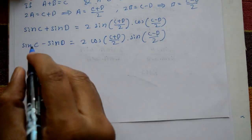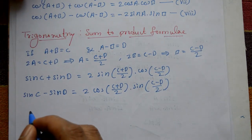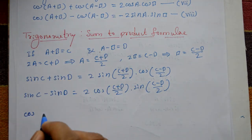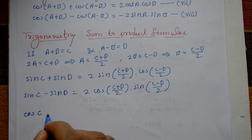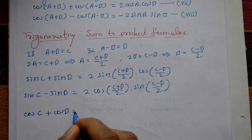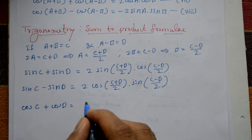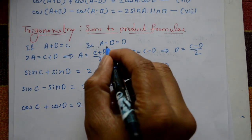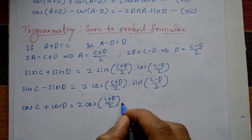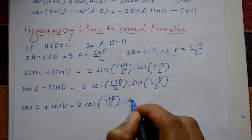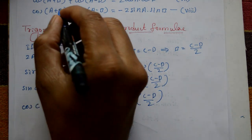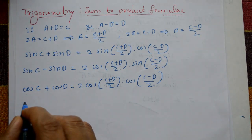Equation number seven becomes: cos C + cos D = 2 · cos((C + D)/2) · cos((C − D)/2).